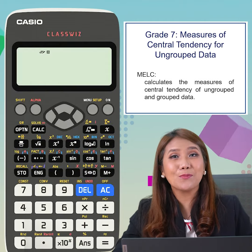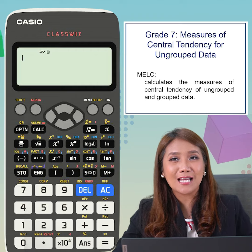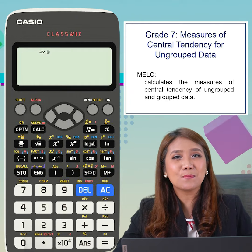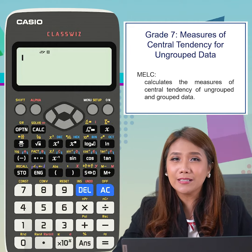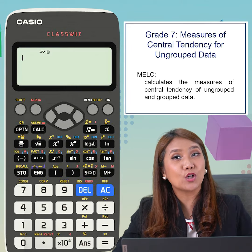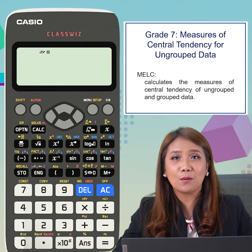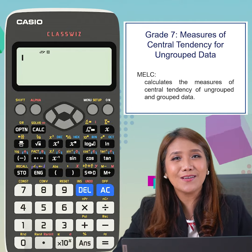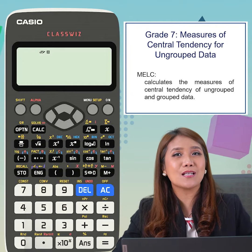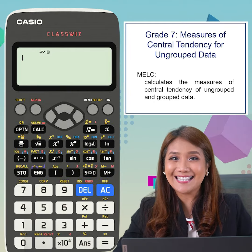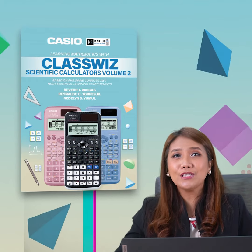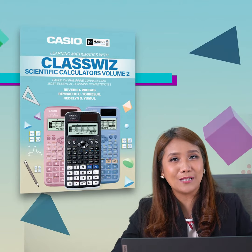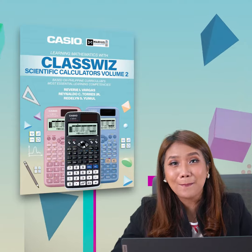Hi guys! For this video, we will explore a feature of Casio Classwiz Calculator that is specifically applicable in solving measures of central tendency. Usually, to solve the measure of central tendency for ungrouped data in a given problem, we do manual computation. In this video, we will see how Casio Classwiz can innovate the way we do things in statistics. And great news — this lesson can be found in the Casio Book on the topic measures of central tendency for ungrouped data, which is truly amazing!